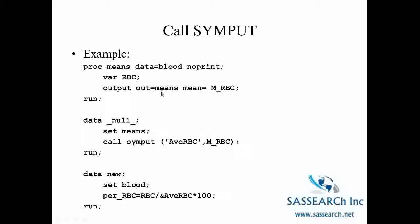This output data set means is going to have one variable on it, M underscore RBC, which is the mean red blood cell count for this group of patients. Then we are going to create a new data set called data underscore null underscore. This data underscore null underscore is a way of creating a data set that is just used for processing observations. It is not used for creating a temporary SAS data set. So basically we are just processing this one observation set from the data set means.